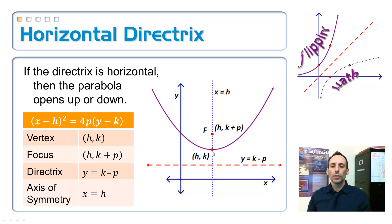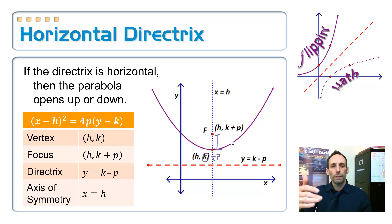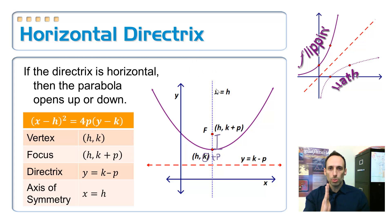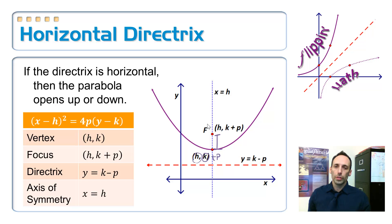Looking at all of these little points: vertex is of course h, k; the focal length is p. And since I'm going upwards, this is in the y direction, so I take k plus p and that's where the new coordinate of my focus is. If I subtract that from the vertex, I get y minus p, and that's the equation of the directrix. The directrix is horizontal, which means the axis of symmetry is vertical — it's a vertical line x equals h, the x-coordinate of the vertex, because the vertex and the focus are both on the axis of symmetry.